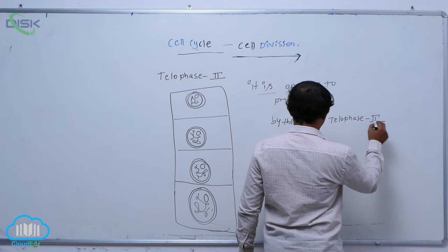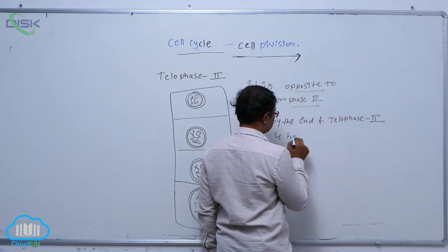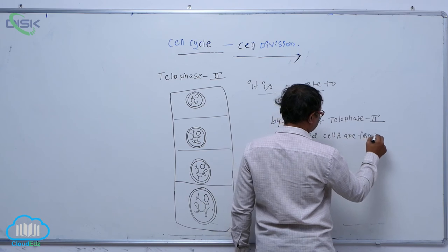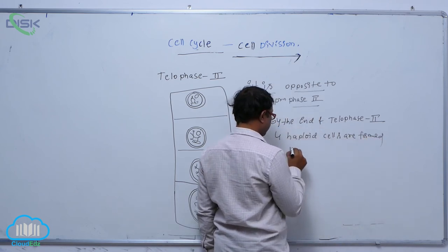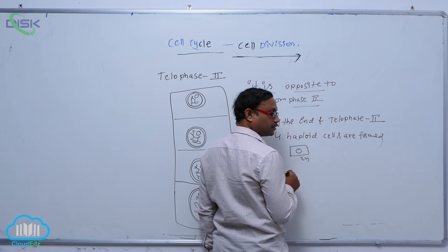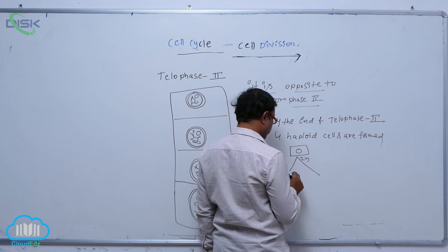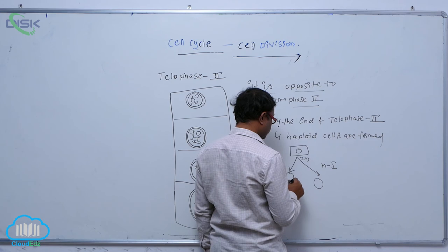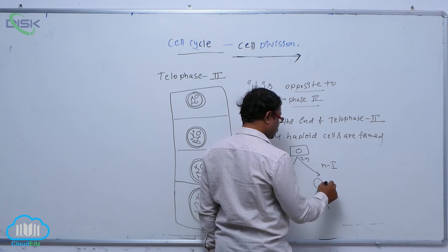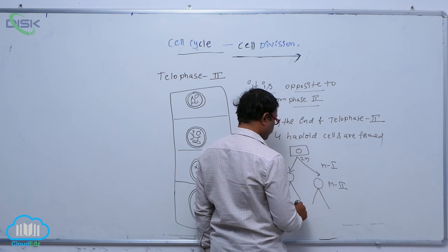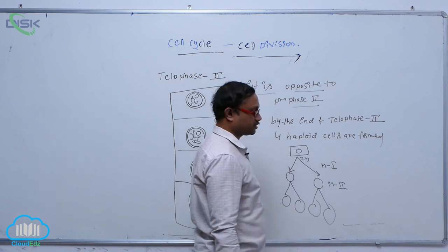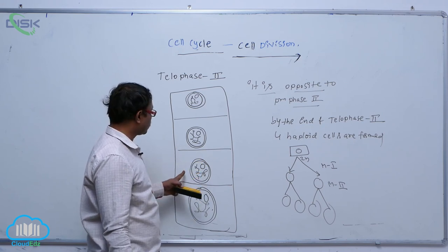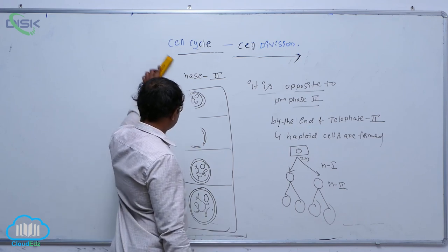By the end of telophase II, four haploid cells are formed after the cytokinesis process. Starting from one diploid cell, meiosis I produces two haploid cells, and then each cell undergoes meiosis II producing four haploid cells total. These four haploid cells are not identical to the parent cell, and this is the meiosis process.